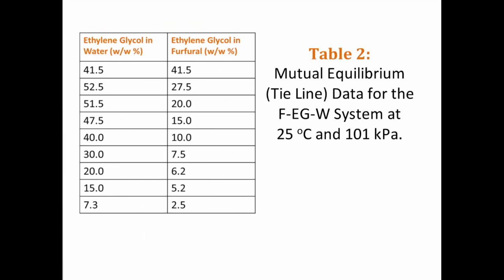This table is also given by the question. It shows the compositions of pairs of mixtures that would be at mutual equilibrium. This refers to when a non-equilibrium mixture is left to settle and it separates into two mixtures that form mutual equilibrium.